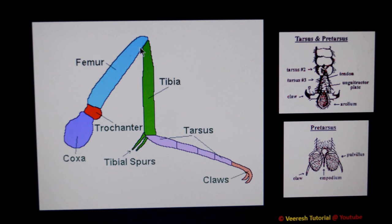The third segment is the femur, which is usually accommodated with more muscles. The fourth segment is the tibia, which is the long and slendermost segment of the insect leg. Usually in many insects, it widens distally.